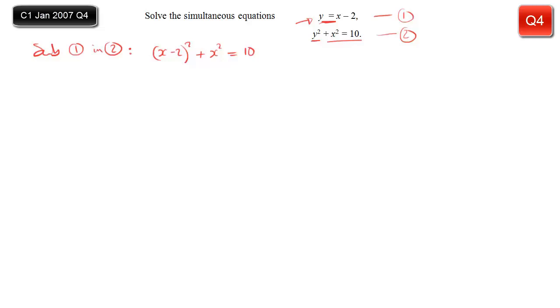And now basically we have a quadratic, and we can solve it to find the x values. So we'll need to multiply out the brackets. x squared, minus 4x, plus 4. And then we've got the other x squared, and it equals 10.